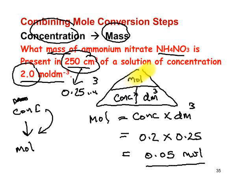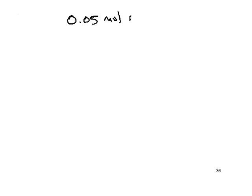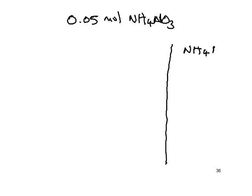We've succeeded in changing concentration into moles — we have 0.05 mol. I'm now going to convert this into mass. So we take 0.05 mol of ammonium nitrate, formula NH₄NO₃. Remember, it's a good idea to have this natural tendency to want to turn things into moles. Now I'm going to find out what a mole of ammonium nitrate weighs.